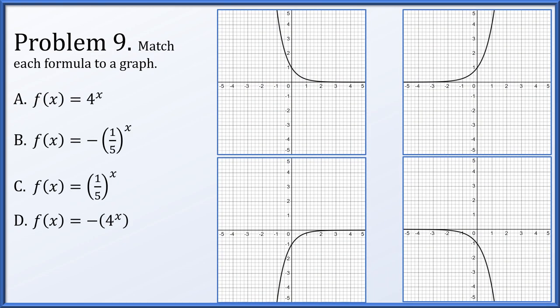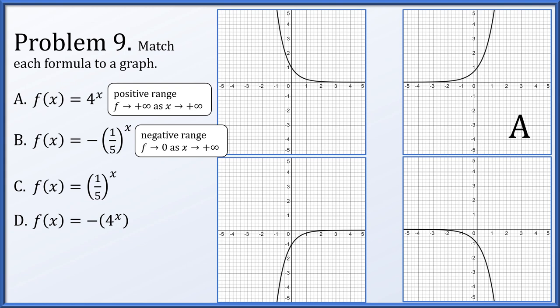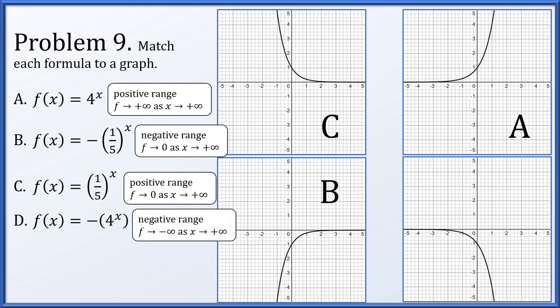For problem 9, match 4^x, -(1/5)^x, (1/5)^x, and -4^x to the graphs. 4^x has a positive range and as x goes to positive infinity it goes to infinity — that's the upper right graph. -(1/5)^x has a negative range, and as x increases (1/5)^x collapses to 0, so it approaches 0 from below — that's the bottom left. (1/5)^x has a positive range and still goes to 0 as x increases — that's the upper left. And -4^x has a negative range and goes to negative infinity as x increases — that's the bottom right.